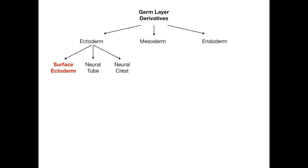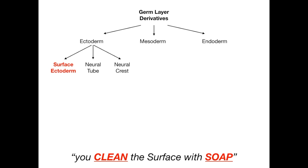Let's start with the surface ectoderm. The mnemonic for surface ectoderm, neural tube, and neural crest is each going to be a simple sentence related to the key word. For surface ectoderm, you focus on the word 'surface.' The mnemonic is: you clean the surface with soap. 'Clean' (C-L-E-A-N) and 'soap' (S-O-A-P) are the mnemonics for remembering what comes from the surface ectoderm — because you clean the surface with soap.